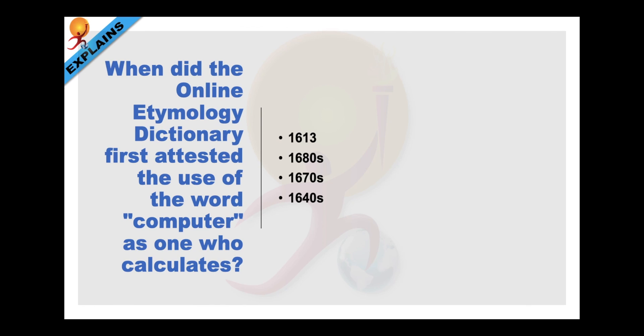When did the online etymology dictionary first attested the use of the word computer which means as one who calculates? Etymology is the study of the origin of the words and the way in which their meanings have changed throughout the history. The online etymology dictionary first attested the use of the word computer in 1640s.